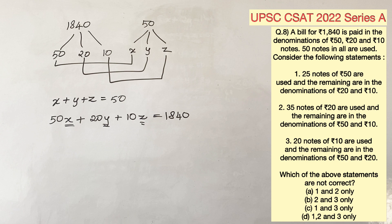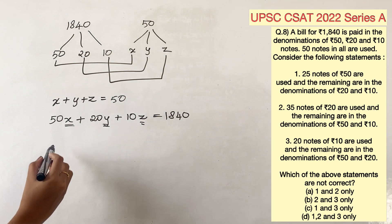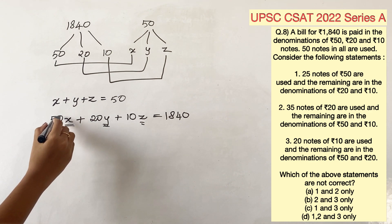Since there are three different denominations, we are multiplying the number of notes with them, and then adding them all up. The total amount is 1840, thus the equation is formed.